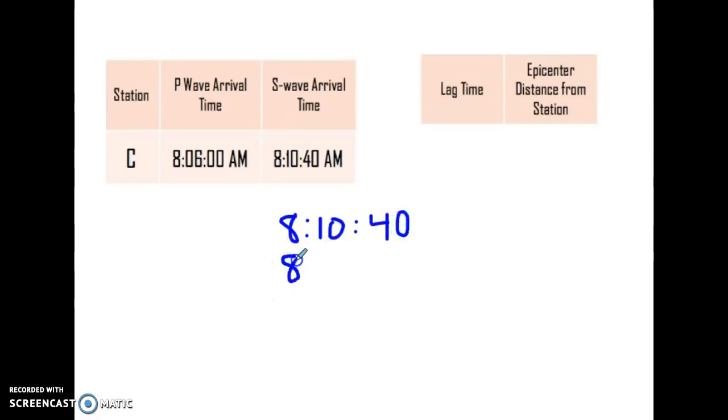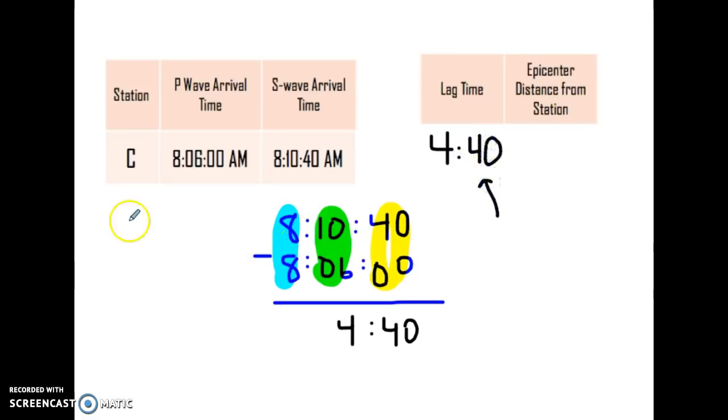And then minus P wave. 8, 06, 0. And we're going to subtract the two. So when you do this, it's important that you just keep these in sections. So I'm only going to look at this section. Then I'm only going to subtract this section. And then finally, I'll look at this section. So my answer for this would be 40 minus 0 is 40. 10 minus 6 is 4. And 8 minus 8 is 0. So I'm just going to let that go. So my lag time is 4:40. Now I need this lag time to do the next part again.